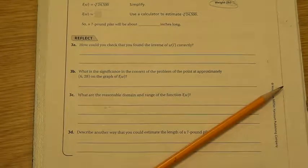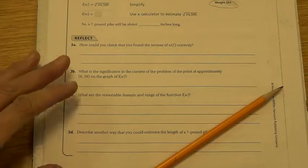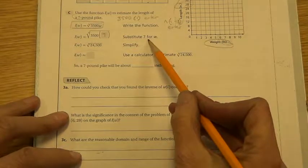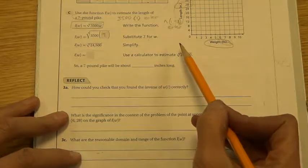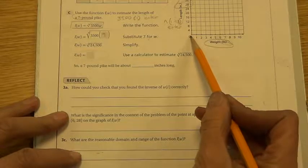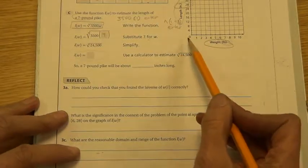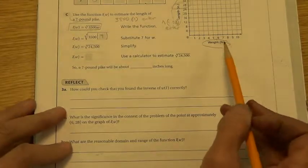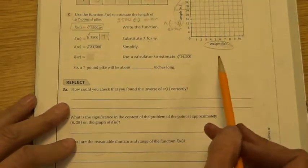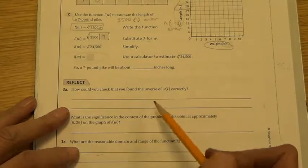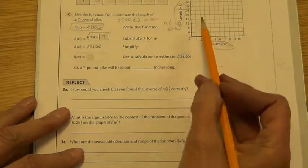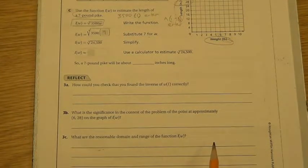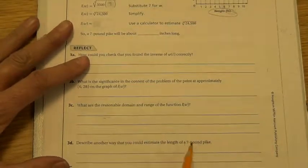What is the significance of the context of the problem? If we come up to the graph, 6 and up to 28 means that you've got a six-pound, always include your axis when you're going with the context of a problem, of a six-pound fish that is about 28 inches long. That would be the context. What are the reasonable domain and range of the function? Well, domain, let's think about this. If you're looking at weight, what are some numbers that you couldn't have for weight? Can you have a fish that's less than a zero? Can you even have a fish that's zero pounds? Not if he's a fish, he's got to have some weight. So reasonable domain would be a positive, above zero.